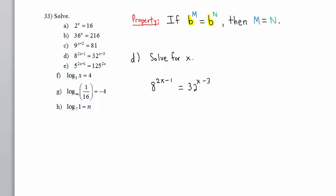In problem D, we recognize that 8 and 32 are both powers of 2. 8 is 2 to the third power, so we have 2 to the third power raised to the 2x minus 1. 32 is 2 to the fifth power, so we have 2 to the fifth power raised to the x minus 3.